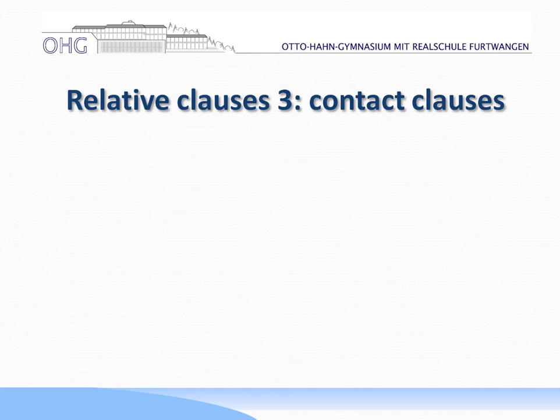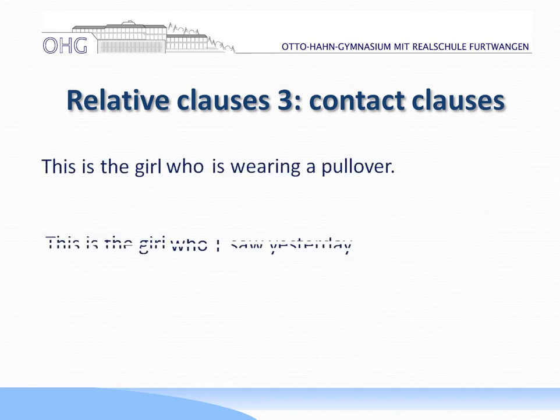Another form of relative clause is the contact clause, or shortened relative clause. For that we will check out these two sentences: 'This is the girl who is wearing a pullover,' and 'This is the girl who I saw yesterday.'